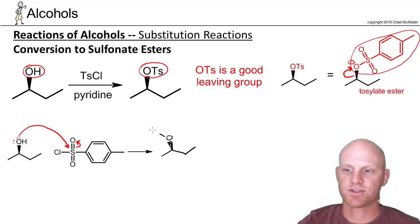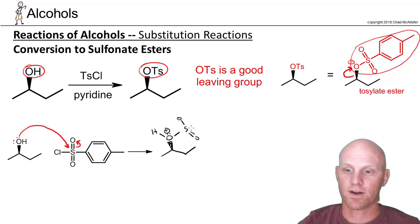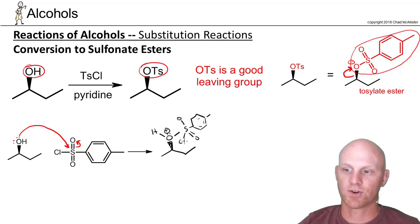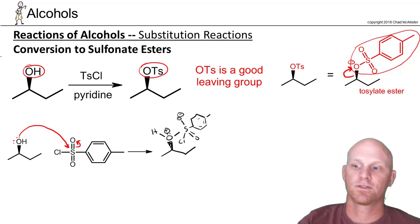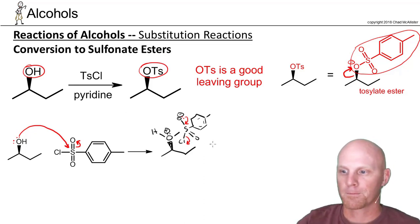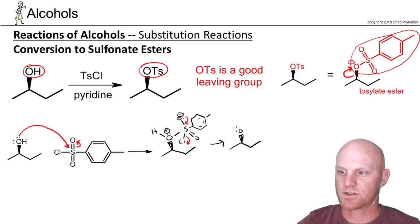This oxygen is still bonded to a hydrogen, so it's going to have a positive formal charge. We still have a double bond to one of the oxygens and this big benzene ring — that's toluene, by the way, sometimes called toluene sulfonyl chloride, or tosyl chloride for short — and it's still bonded to the chlorine. Those electrons kick off the chlorine as a leaving group, and what we've got left just needs to be deprotonated.